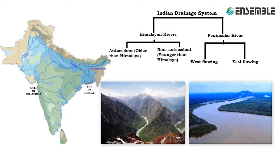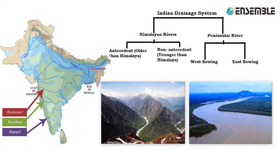The main rivers of the peninsular plateau originate from the Western Ghats and flow in a west to east direction to join the Bay of Bengal — rivers like Godavari, Krishna and Kaveri. The Narmada and the Tapti are the two exceptions which flow towards the west and join the Gulf of Kambhat.